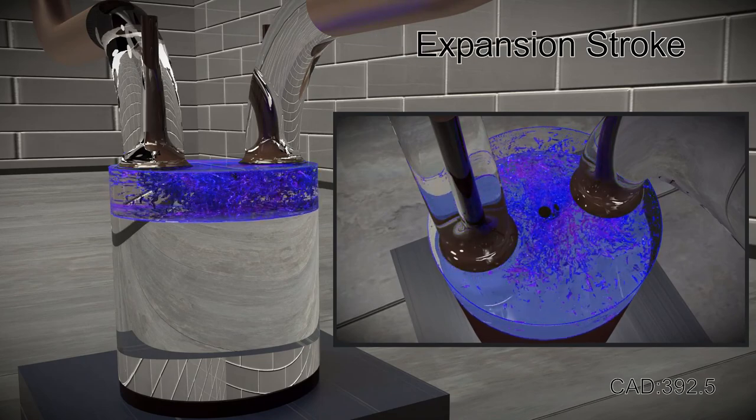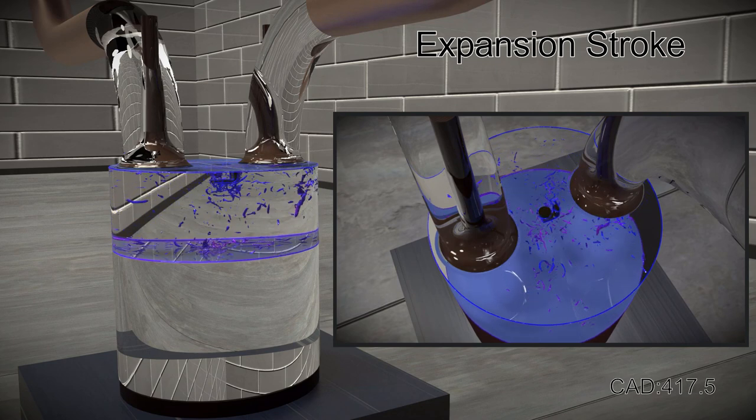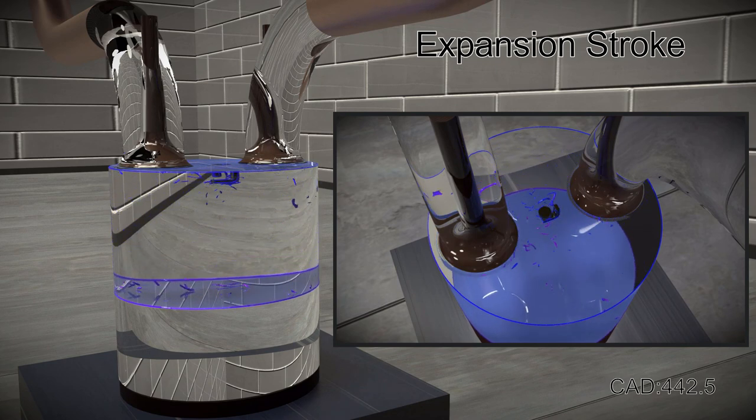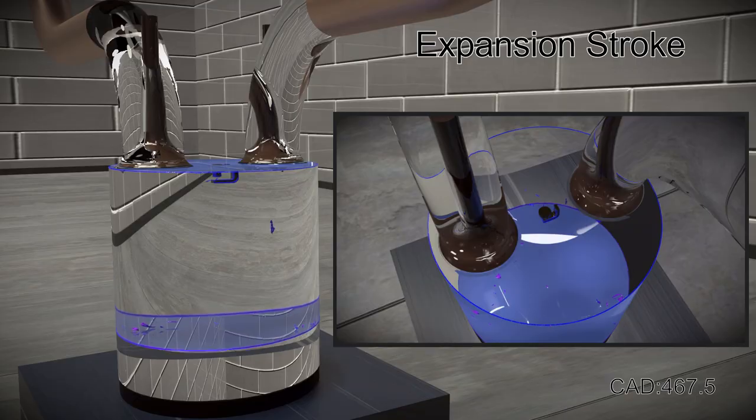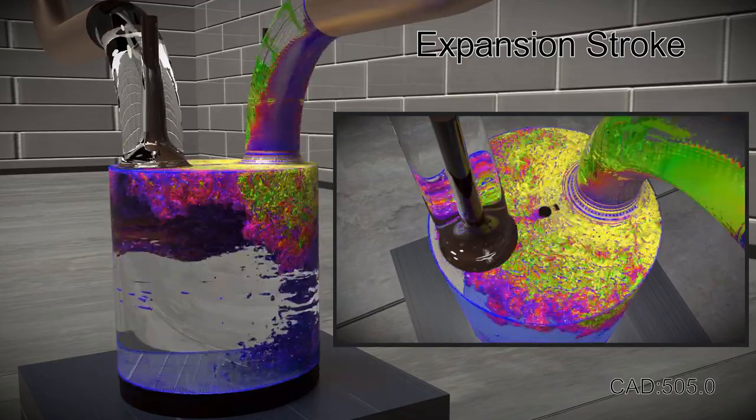Compression is followed by the expansion stroke, where the piston moves downward, which increases the volume of the chamber. Here, a sharp suppression of turbulent kinetic energy reduces the appearance of vortex structures.